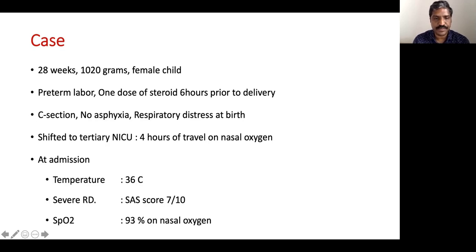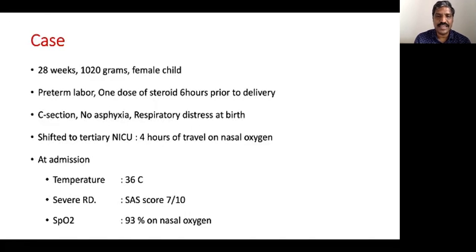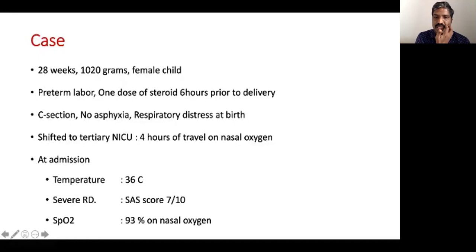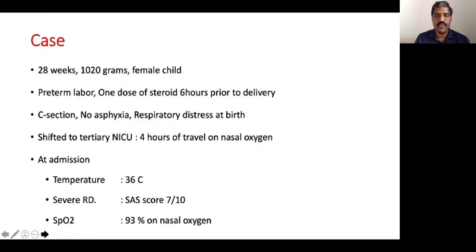The baby had severe respiratory distress. One very important method of scoring respiratory distress in preterm babies is the Silverman-Anderson score. It tells you the severity of lung inflation — the higher the score, the more the atelectasis, the more alveolar collapse, and the higher the need for pressure therapy. On oxygen, the baby was maintaining a normal saturation of 93%, yet was struggling with progressive distress reaching moderate to severe level by the time of arrival.